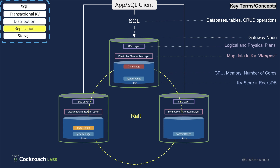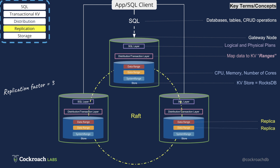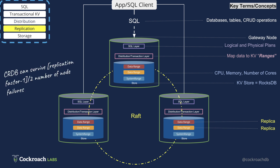CockroachDB distributes your data among your nodes and replicates each range to at least 3 nodes. The number of failures that can be tolerated is equal to (replication factor minus 1) divided by 2. For example, with a replication factor of 3, one node failure can be tolerated.